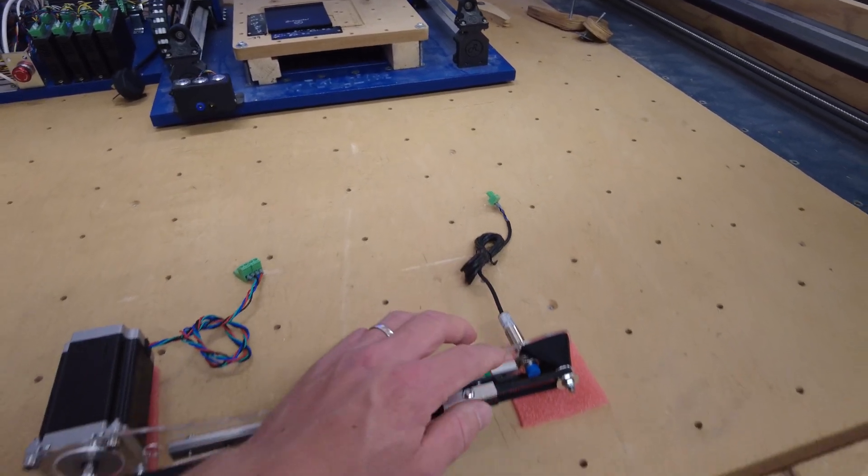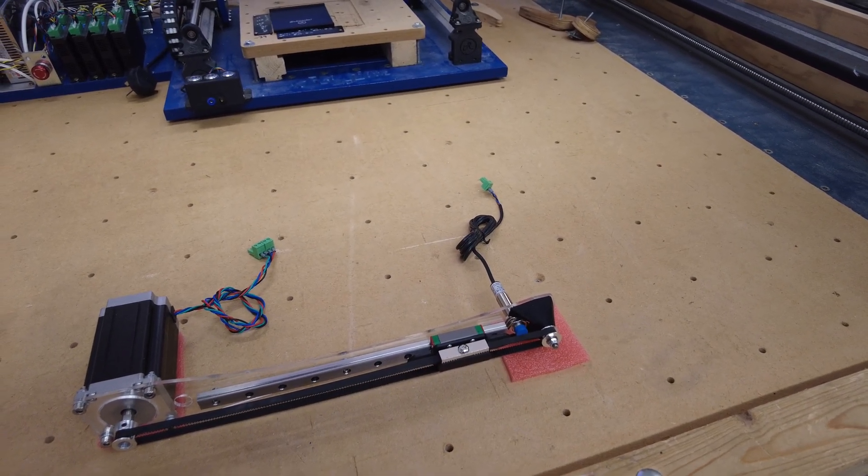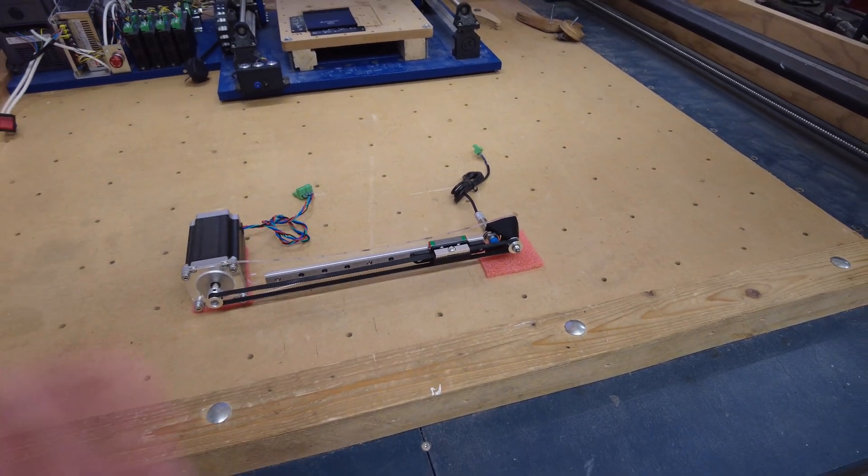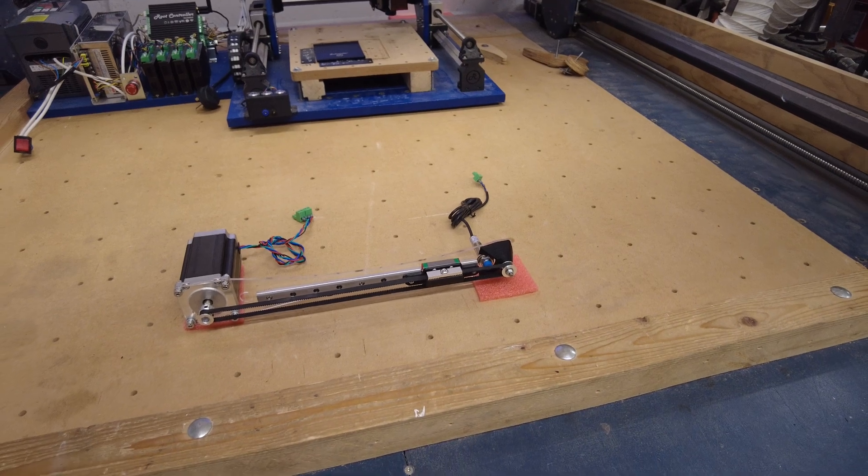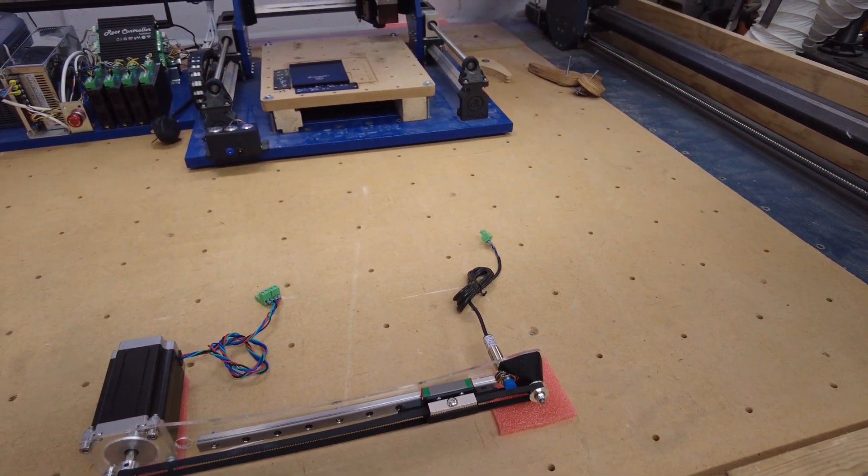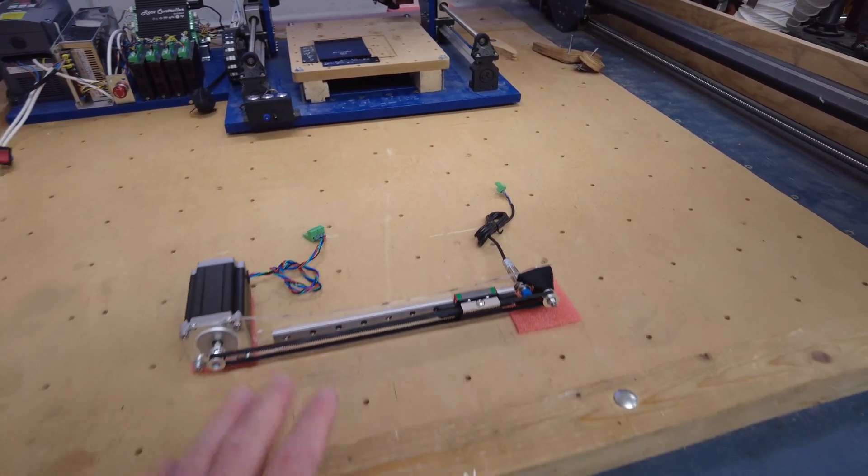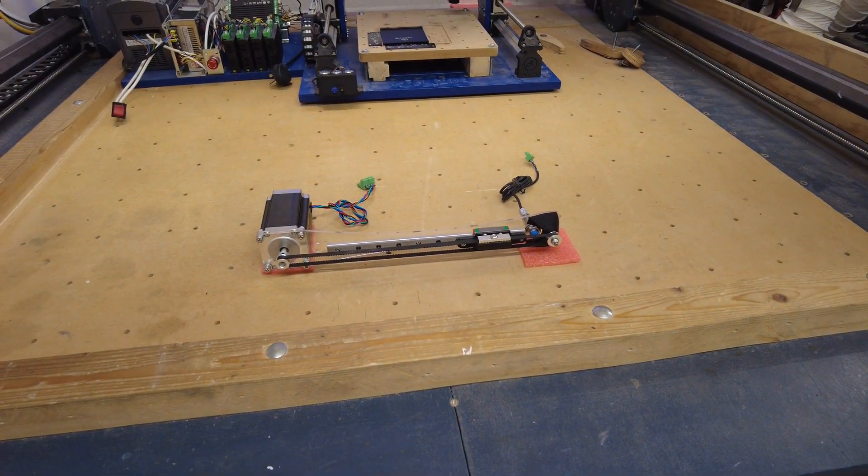On this side we've got an end stop or positional sensor so we can home the machine each time we power it on. This is optional but highly recommended. It gives you the ability to home the machine when you power it on, but also it stops the machine crashing if it ever loses steps.